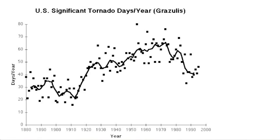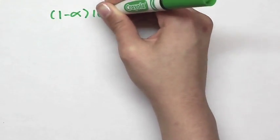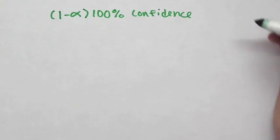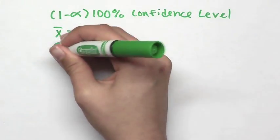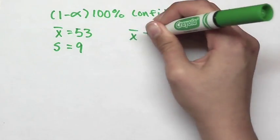Assuming these sample values to be correct, we can form confidence intervals for the expected number of significant tornado days per year. With a 1 minus alpha 100% confidence level, we can use the sample mean x bar equals 53, sample standard deviation s equals 9.